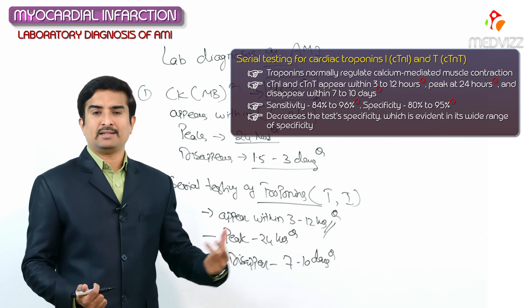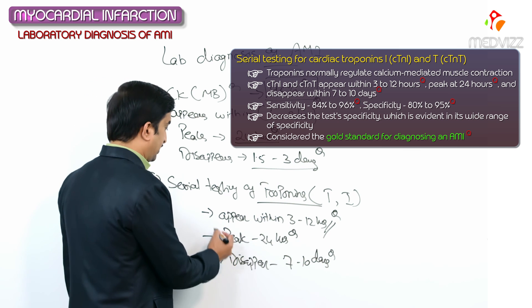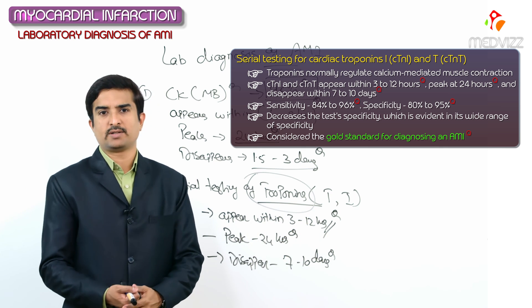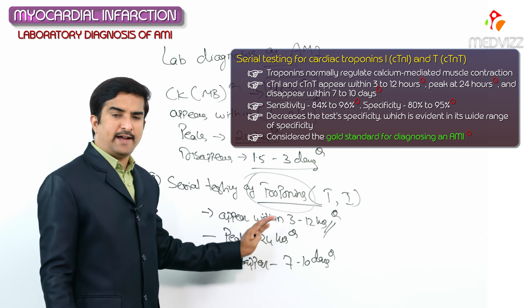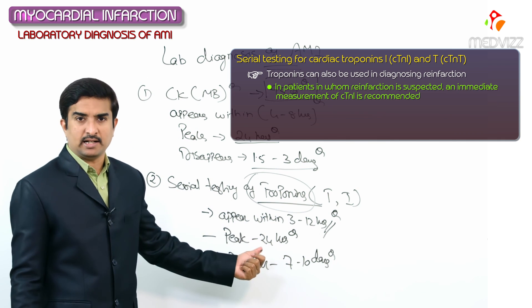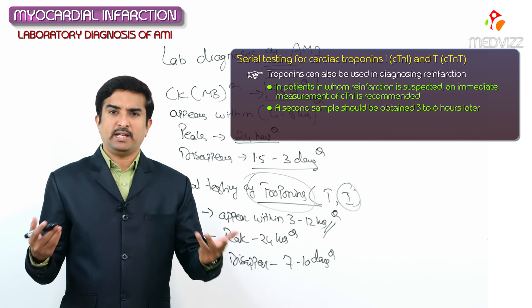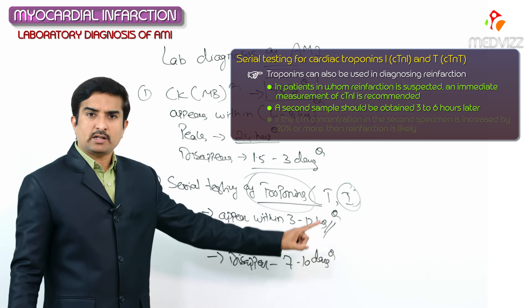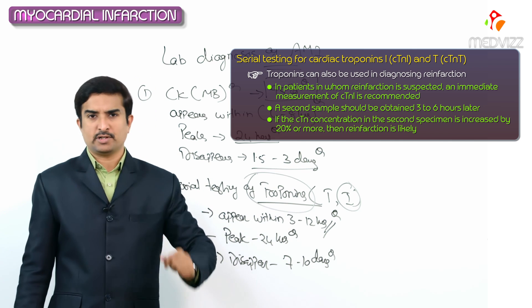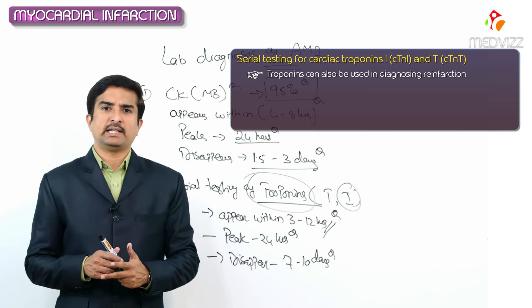The wide range of specificity reflects elevation in multiple conditions, but troponins are still considered the gold standard for diagnosis of acute myocardial infarction. They are also useful for diagnosing reinfection: intermediate measurements of cardiac troponin I are recommended, a second sample should be obtained three to six hours later, and if the cardiac troponin concentration in the second specimen increases by 20 percent or more, reinfection is confirmed.